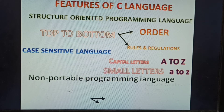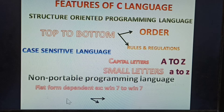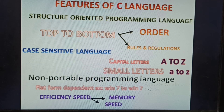Next feature: non-portable programming language. C is a non-portable programming language. It is platform-dependent — for example, Windows to Windows. The program depends on the platform it runs on. Another feature: the memory usage is very less and the speed is very fast.